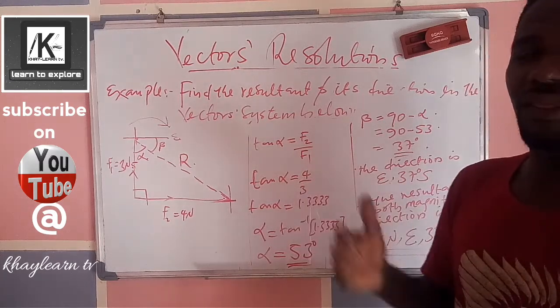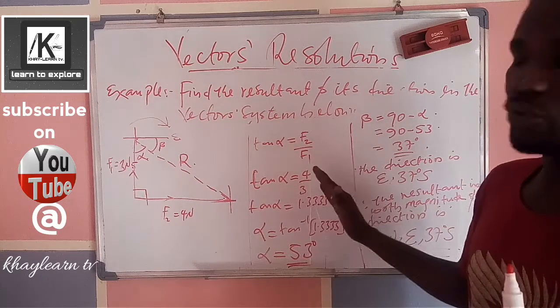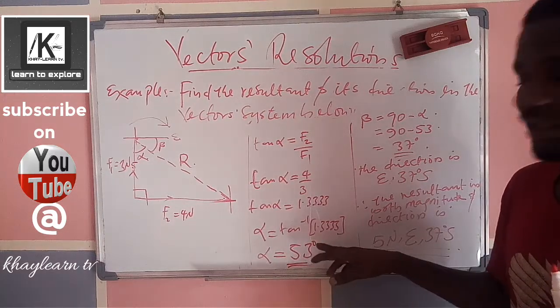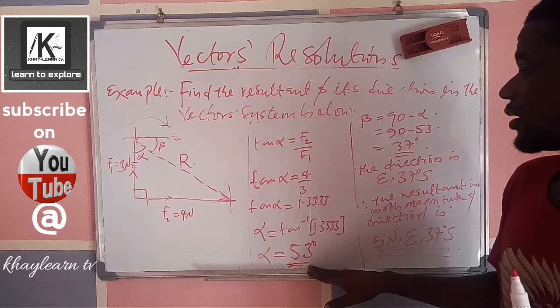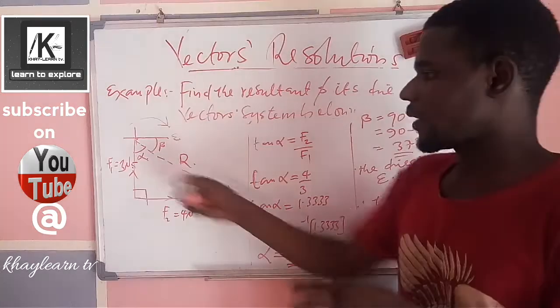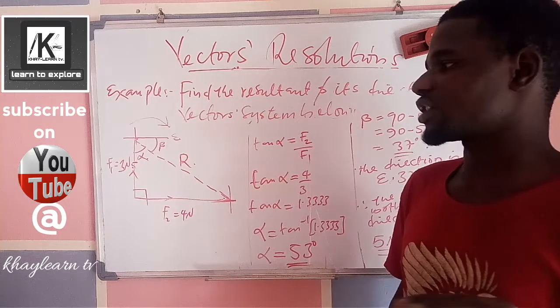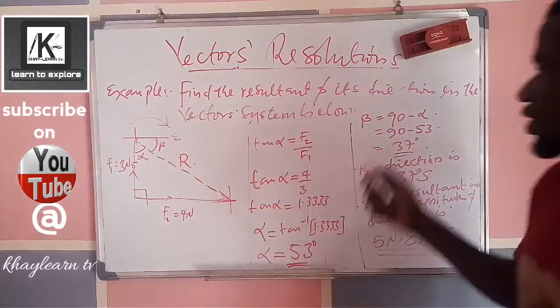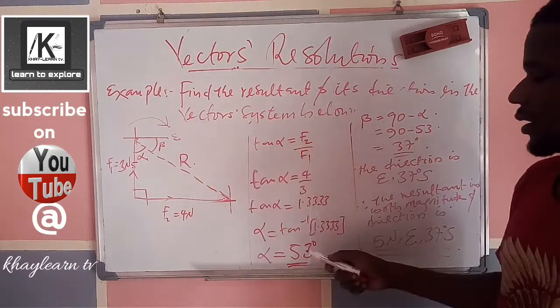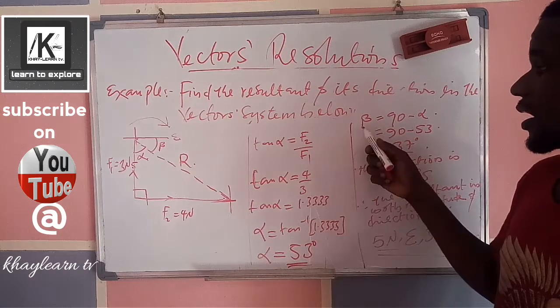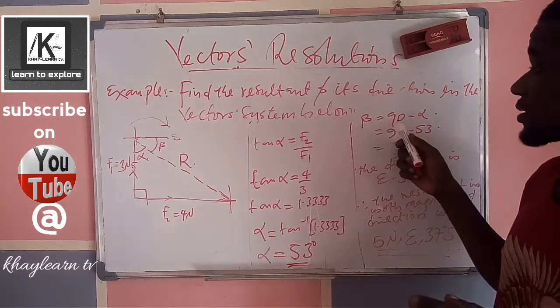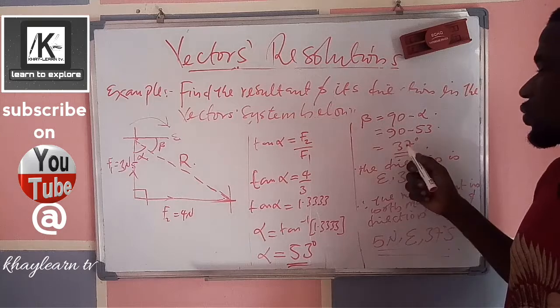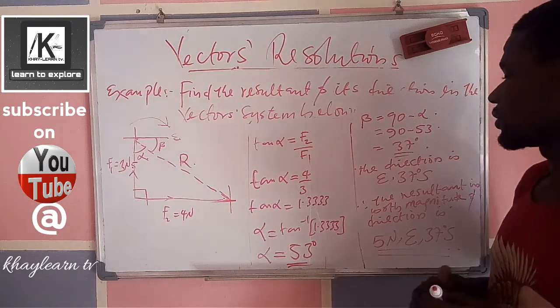When you are pushing this in the calculator, 1.3333, it will give you 53 degrees. Since you have the alpha as 53 degrees, you can get the beta. The beta, then you subtract the alpha from 90 degrees. So 37 degrees is what remains. That is the value of the beta.